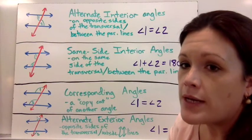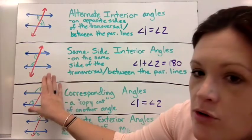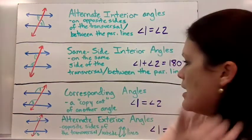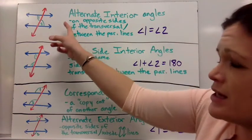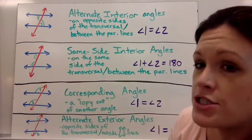The third type are corresponding. I think of corresponding as they look like the same angle but they're in a different spot in your figure. So they're not alternate and they're not on the same side, but they kind of look like they're the same but just in different locations.